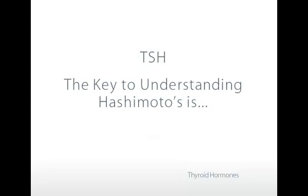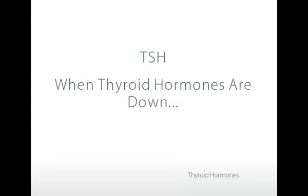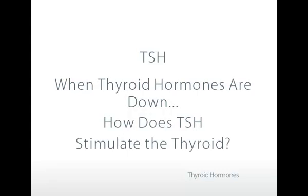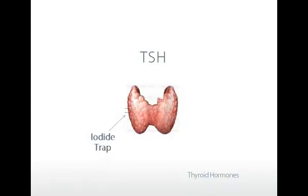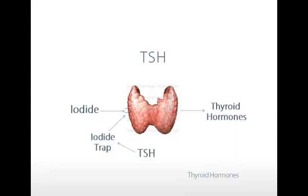The key to understanding Hashimoto's is: when thyroid hormones are down, how does TSH stimulate the thyroid cells? On every membrane of thyroid cells are what are called iodide traps, also known as sodium iodide symports. These traps bring iodide into the membrane of the thyroid cell to make thyroid hormones, and they are upregulated — the number of traps is also increased by thyroid stimulating hormone.